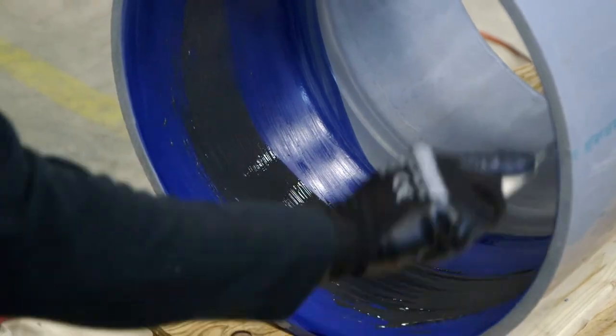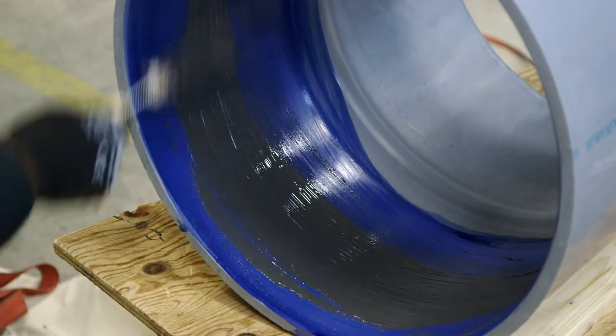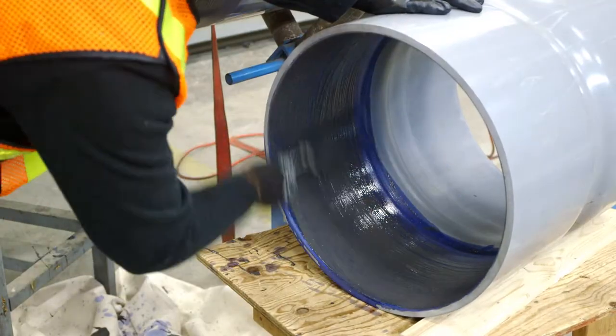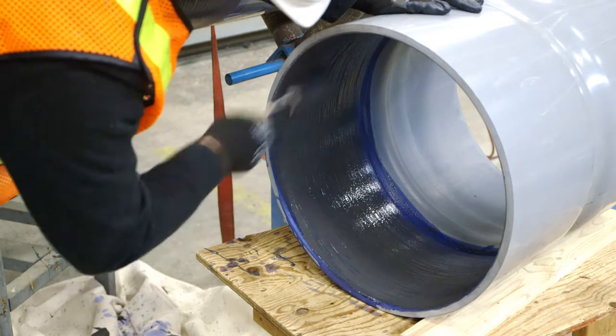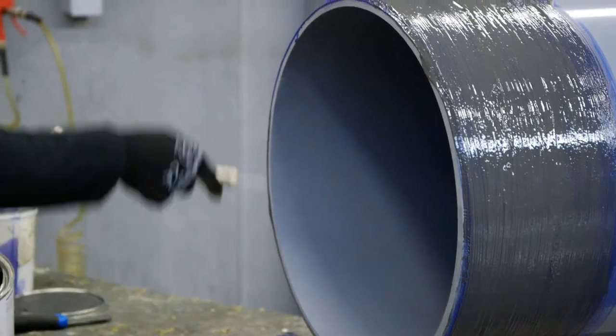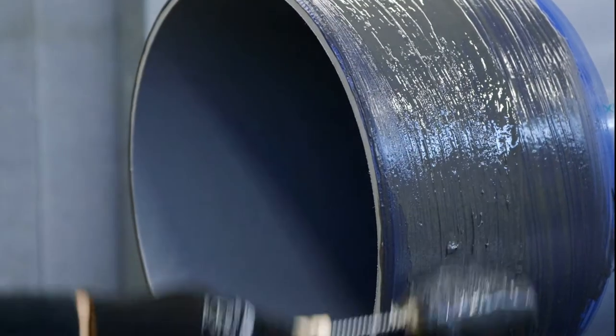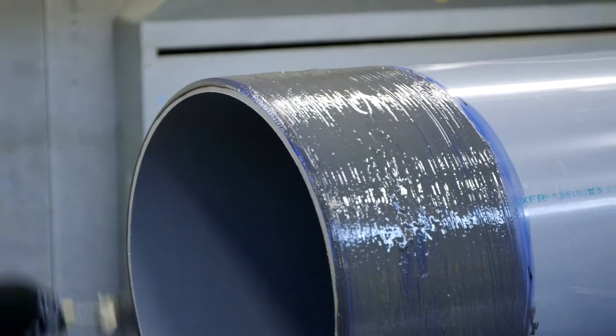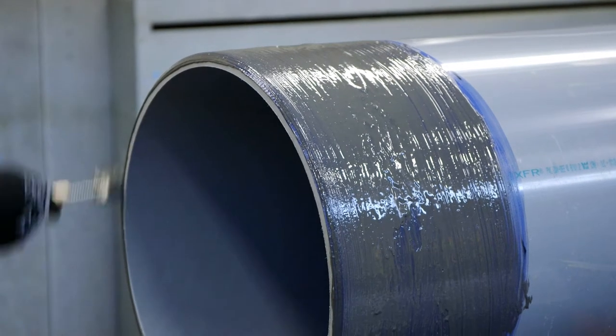Apply a thin layer of solvent cement to the inside of the fitting socket. A thin layer will prevent puddling of the solvent cement inside of the pipe or fitting. Apply a second full, even layer of solvent cement to the pipe end. Excessive solvent cement on the pipe outer diameter should be wiped away after assembly.